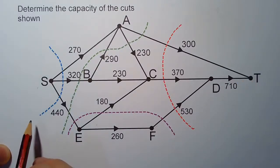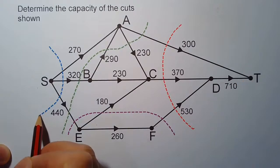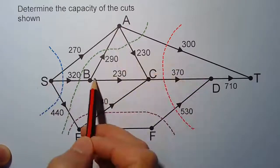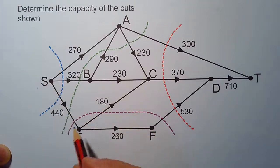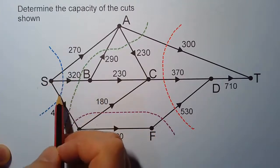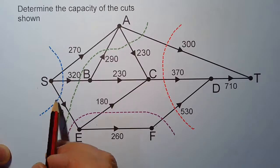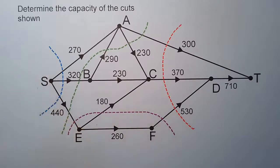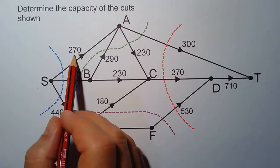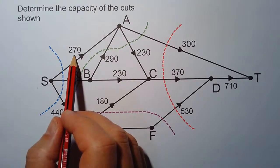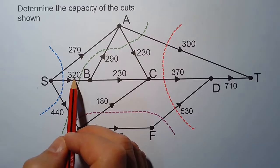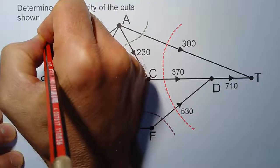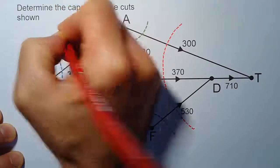Let's have a look at the first two obvious ones. We've got the blue cut here, which cuts through edges SA, SB, and SE. These three edges, if cut off, will most certainly cut off the source from the sink. The capacity of the blue cut is the sum of the weights of those edges: 270 plus 320 plus 440, giving a capacity of 1030.